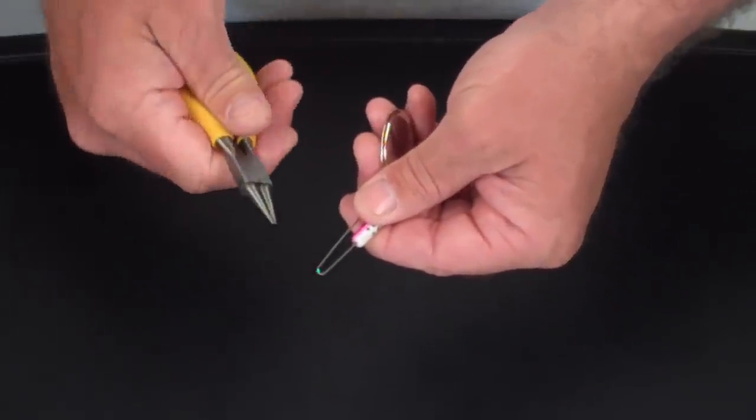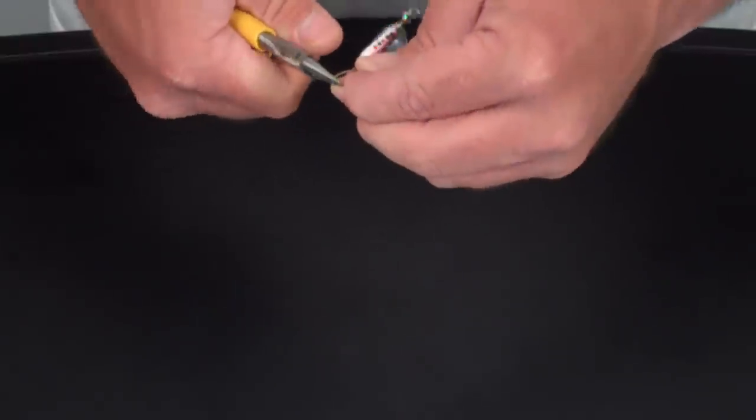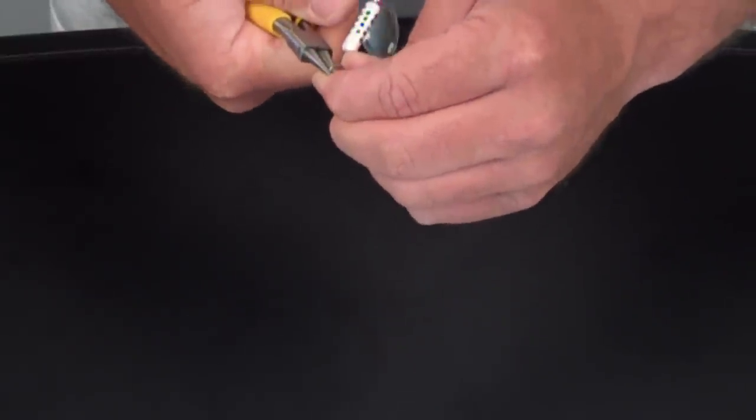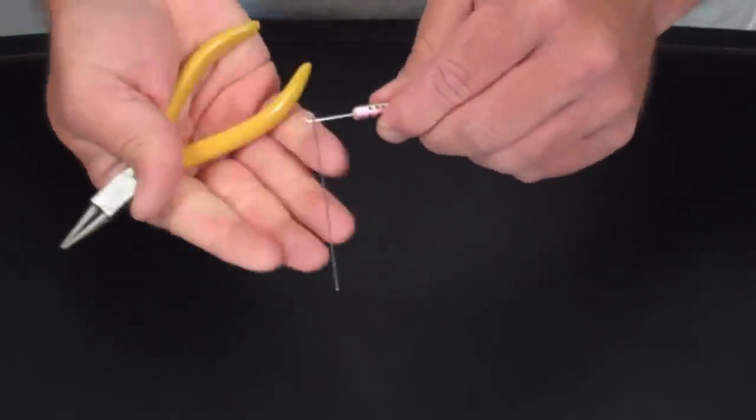With that bend complete, we can use those round nose pliers, take our tag end of our wire, bend it over on a 90 degree angle so that it crosses the main wire shaft.